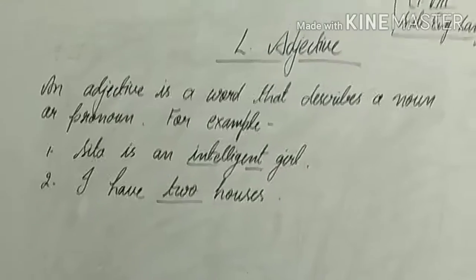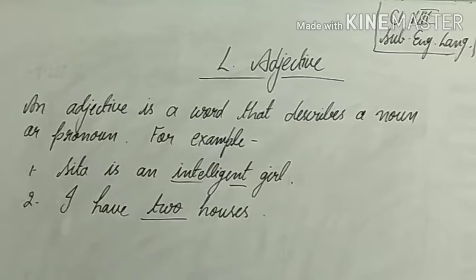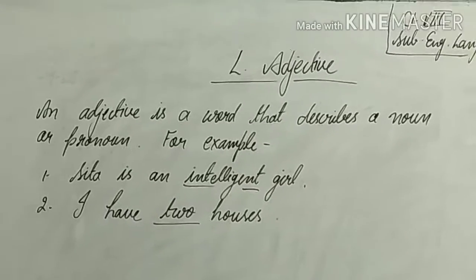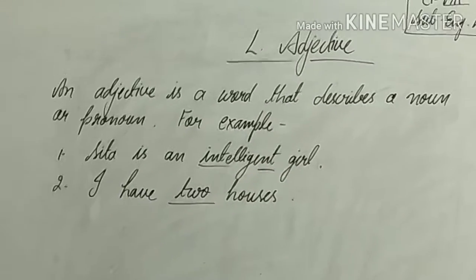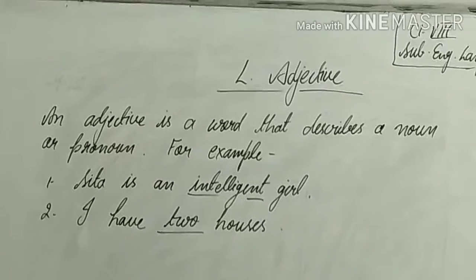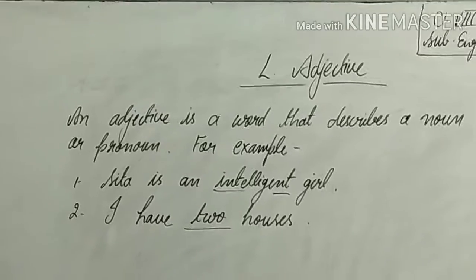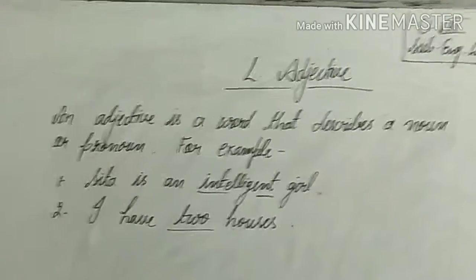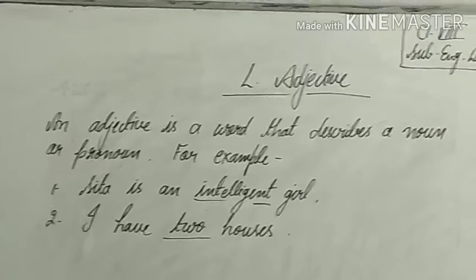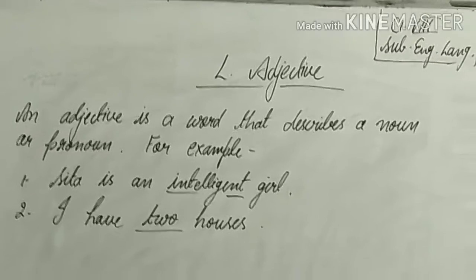Like this: 'I have two houses.' Here the noun is houses, and 'two' is describing it — giving additional information. How many houses? Two, three, four — any number you can use here. So 'two' is giving us additional information about the noun.